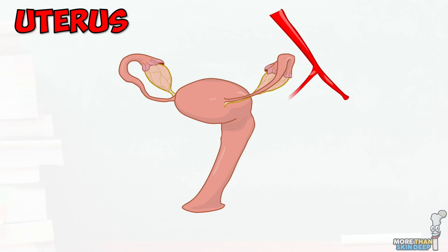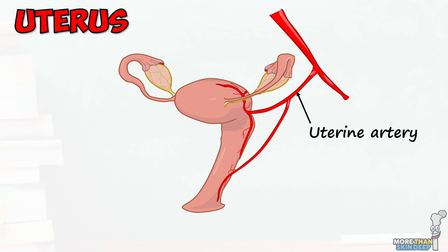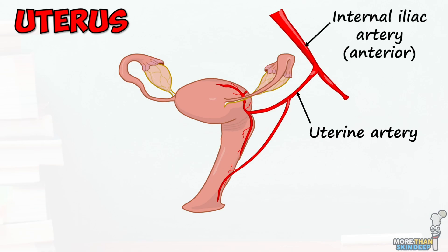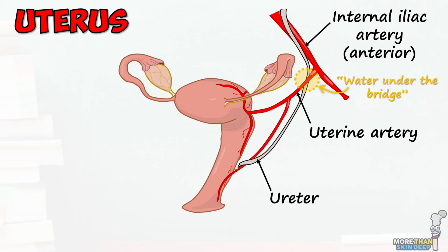Blood arrives at the uterus predominantly from the uterine artery, with a small contribution from the ovarian artery. The uterine artery itself originates from the anterior division of the internal iliac artery. In the pelvis, the uterine artery passes over the top of the ureter, which is on its way to the bladder. This relationship is often described as water under the bridge, where urine passes under the bridge, or blood vessel. This is important because during a hysterectomy, where the uterine artery is removed, the ureter may also be inadvertently damaged.